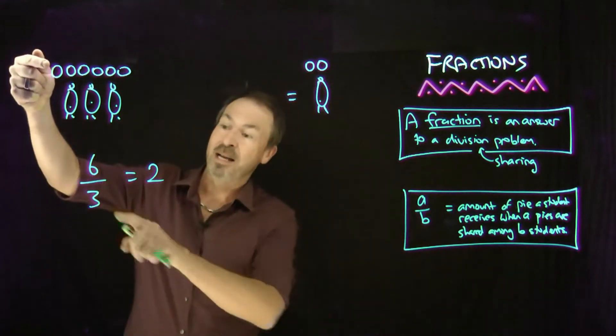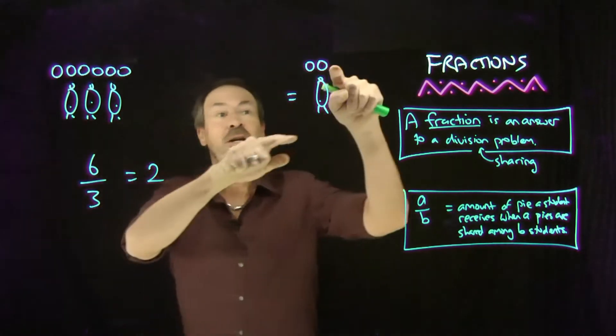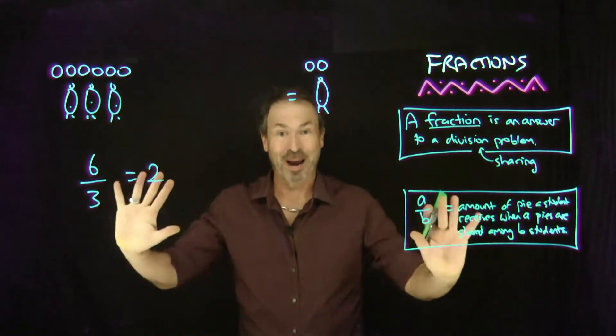For example, six pies shared equally among three students will actually result in two pies per student. Great.